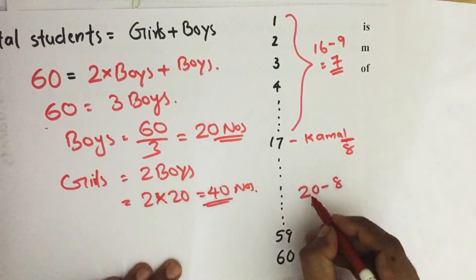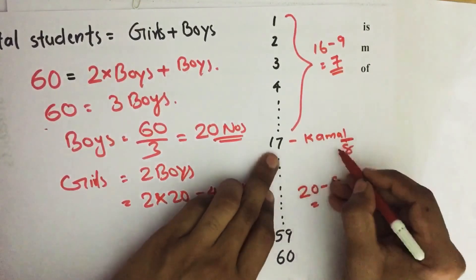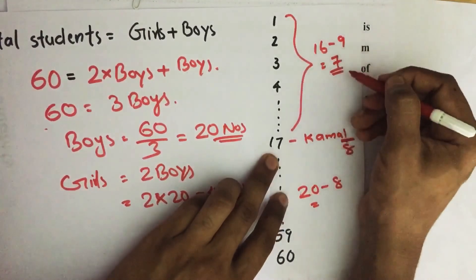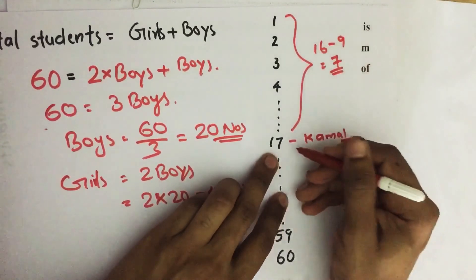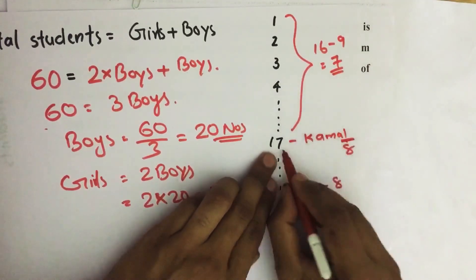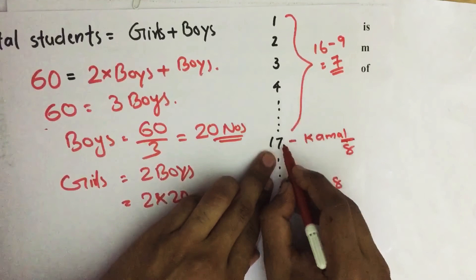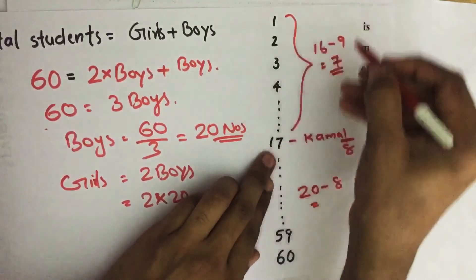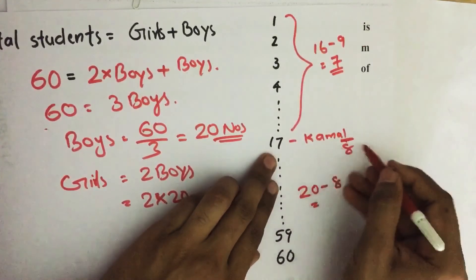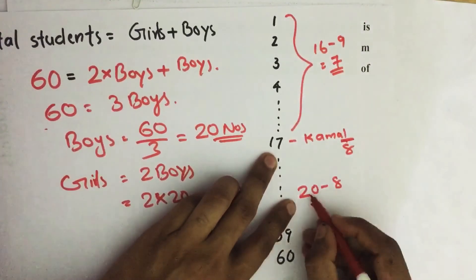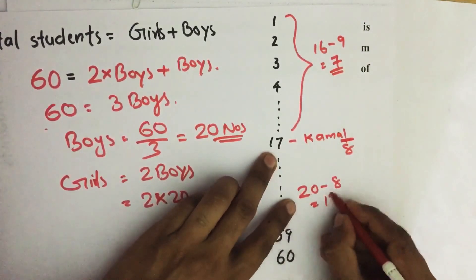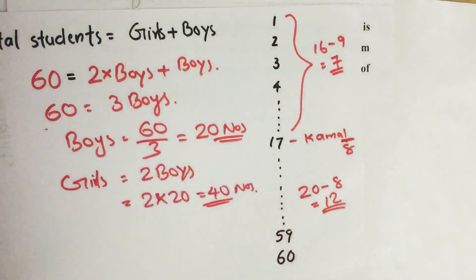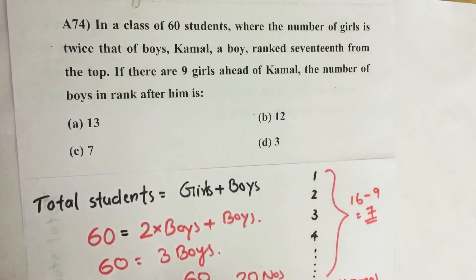Total number of boys equal to 20, including Kamal. There are 8 boys who are ranked greater than or equal to, above 17, including Kamal. Above 17 there are 8 boys, then 20 minus 8 equal to 12 boys are there below 17. Our answer is option B.